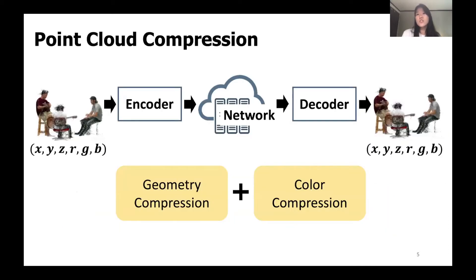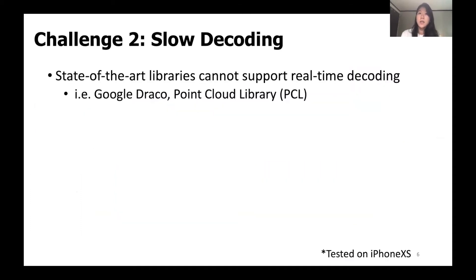Due to the large data size of point clouds, compression becomes crucial. We note that we need both geometry and color compression for point clouds, whereas 2D videos only require color compression. There are multiple state-of-the-art compression libraries such as Google Draco and Point Cloud Library. However, those libraries could not be adopted to the streaming system, mainly because of the slow decoding speed, even on the latest commodity smartphones such as the iPhone XS.